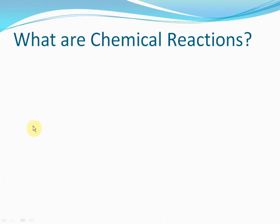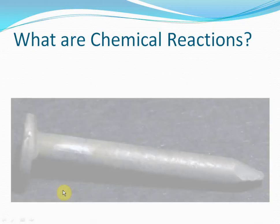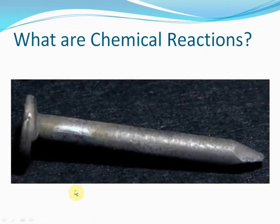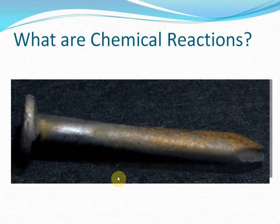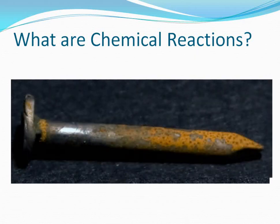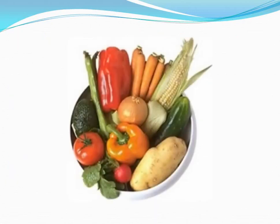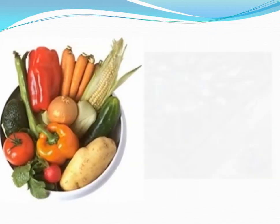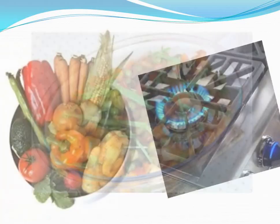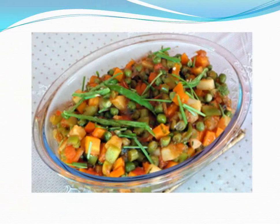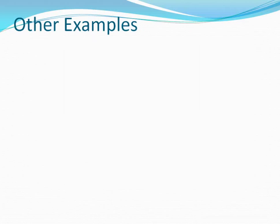What on earth are chemical reactions? Before we learn exactly what a chemical reaction is, let's look at some common examples all around us. You must have seen nails like this, and after some time nails rust and become like this. Rusting of iron is a chemical reaction. Every day we cook food — we have vegetables, and when we heat them, food develops. So cooking of food is a chemical reaction. Chemical reactions are definitely all around us.